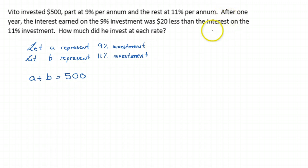And if we look here, it says after one year, the interest earned on the 9% investment was $20 less than the interest earned on the 11% investment. So in this case, we know that we can calculate the 9% investment by 0.09A. And since this amount is $20 less than the 11% investment, we can then say this is equal to 0.11B minus 20. Because if we subtract 20 from the 11% investment, we should get the amount of the 9% investment. So we'll call this equation one. We'll call this equation two.